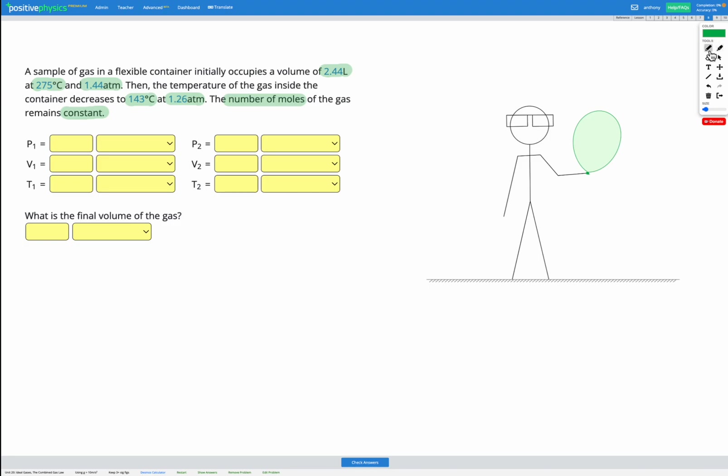So let's go through and label what we've got. We've got an initial volume V1, initial temperature T1, and an initial pressure P1.